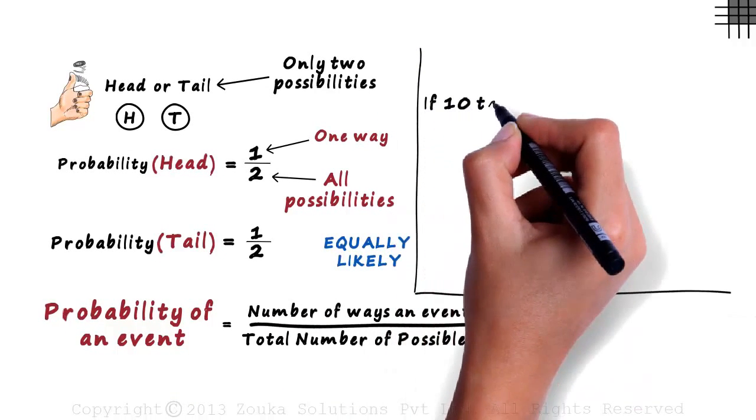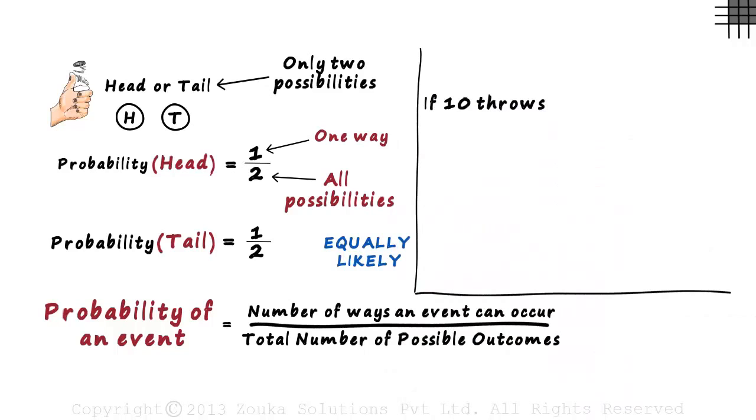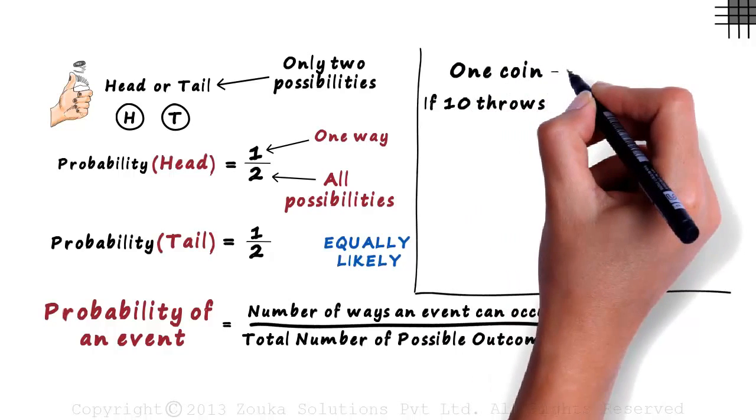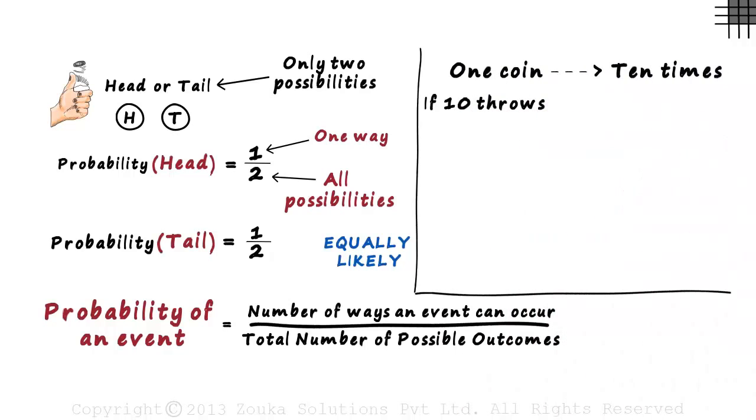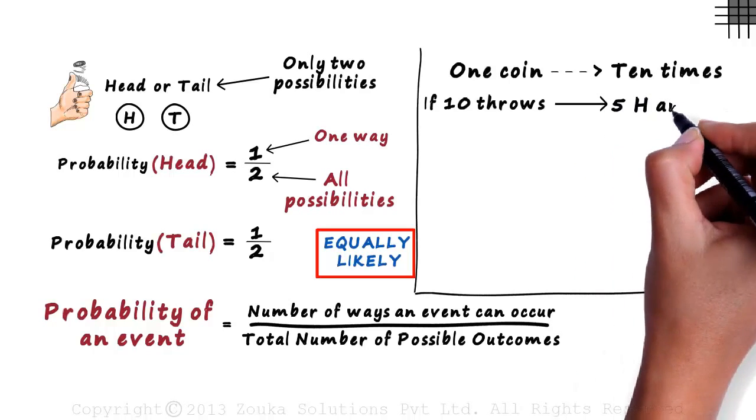What if there are 10 throws of a single coin? I am not talking about 10 coins tossed simultaneously. I am talking about one coin being tossed 10 times. Since the events are equally likely, does that mean that after 10 throws, we will surely get 5 heads and 5 tails?